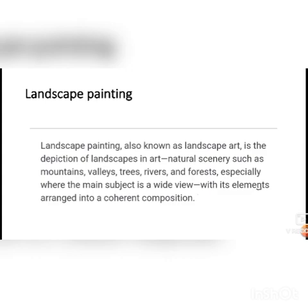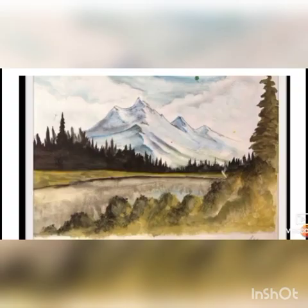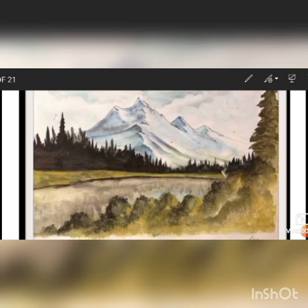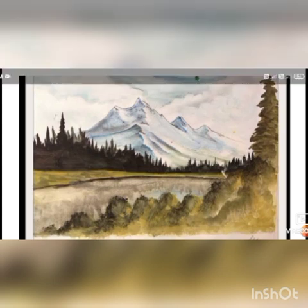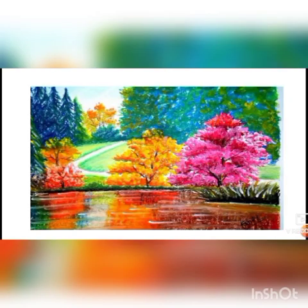Next is landscape painting. Landscape painting, also known as landscape art, is the depiction of landscape in art — natural scenery such as mountains, valley, trees, river and forest, especially where the main subject is a wide view with the elements arranged into a composition. Here you can see the landscape painting, hill area — again landscape painting.